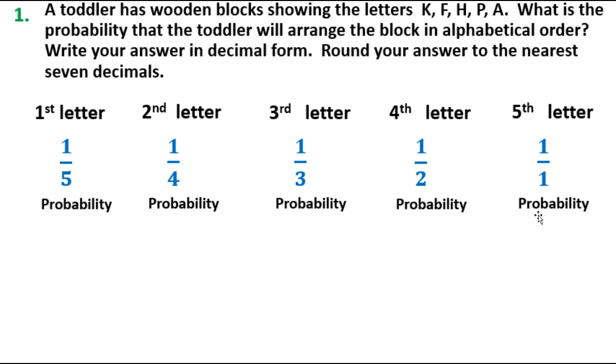Now we've calculated the probability of each one. We need to calculate the probability that all of these will happen in order. What we're going to do is multiply all of these together. Essentially what we're left with is 1 over 5 factorial.